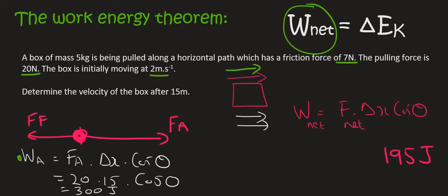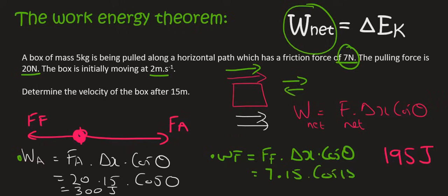You would then have to look at the work due to friction. And that's going to be equal to the force of friction times by delta x times by the cos of theta. Now the force of friction is 7 newtons. The distance is 15. And if the object is moving to the right, friction would always go in the opposite direction. So that's going to be cos 180. And so if you type this one on the calculator, you end up with negative 105 joules.